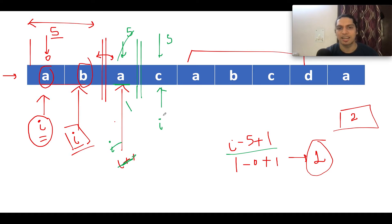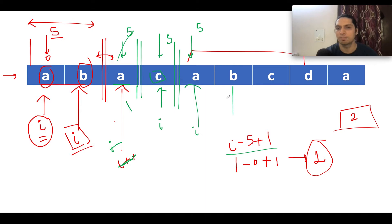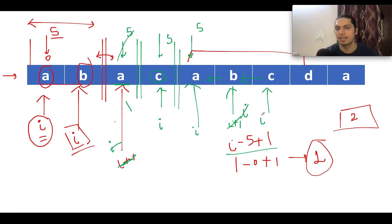Let's proceed. The next character is 'c', and comparing it with i+1 — it's not contiguous, so we do the reset operation: s and i both point to the next position. Now comparing i+1 with i, we have 'b' at i+1 and 'a' at i — these are contiguous. We increment i. Again, i+1 and i are contiguous, so we update i. We do the same thing again — contiguous, so i gets updated.